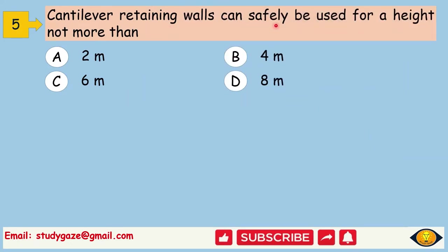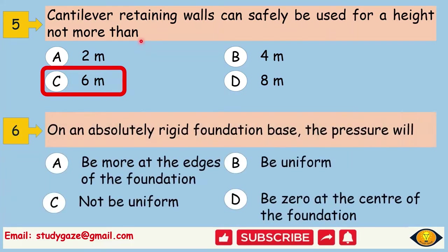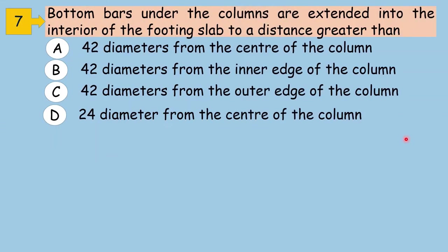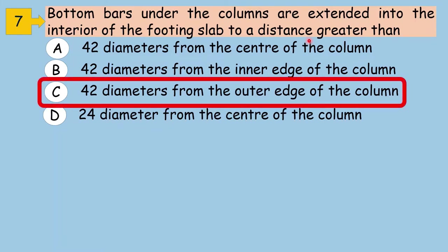Cantilever retaining walls can safely be used for a height not more than. The answer is 6m. On an absolutely rigid foundation base, the pressure will. The answer is not be uniform. The bottom bars under the columns are extended into the interior of the footing slab to a distance greater than. The answer is 42 diameters from the outer edge of the column.